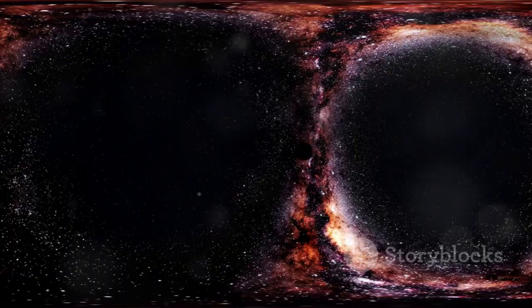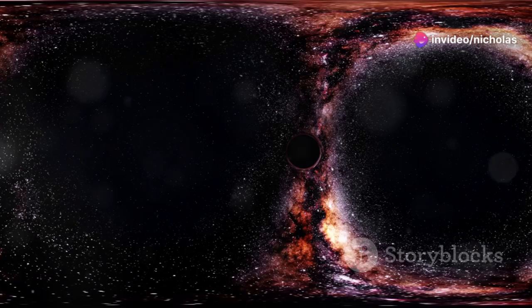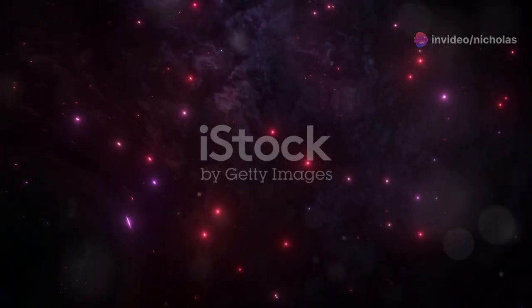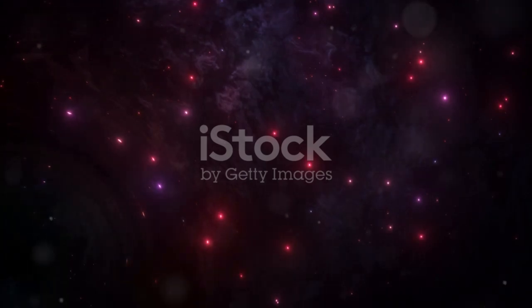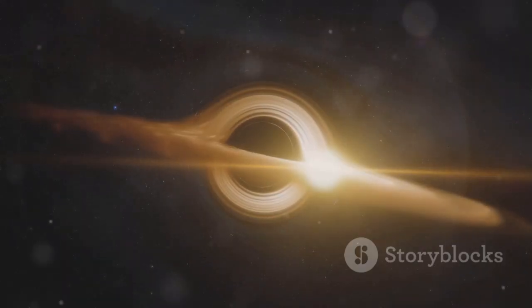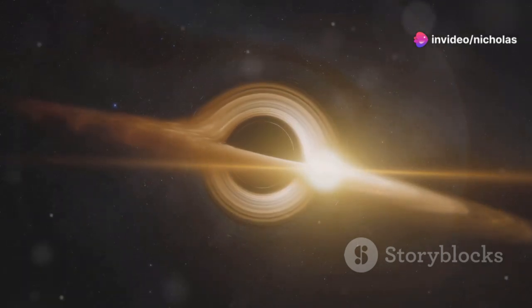Black holes come in a variety of sizes, a cosmic tapestry woven with threads of darkness. At one end of the spectrum are stellar mass black holes, formed from the collapse of massive stars. These black holes typically have masses a few times that of our Sun, but they're squeezed into a region just a few miles across.